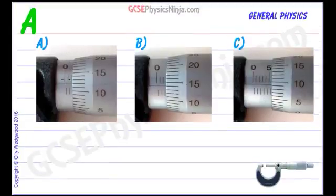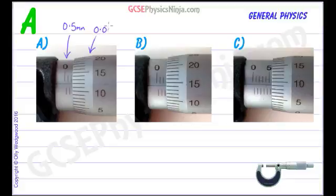The sleeve has half millimeter markings, so this goes up in half millimeter markings. The thimble has markings or intervals of 0.01 millimeters, so these are the intervals on this measuring instrument. The idea is you read off from the sleeve to start with and you add the reading on the thimble.